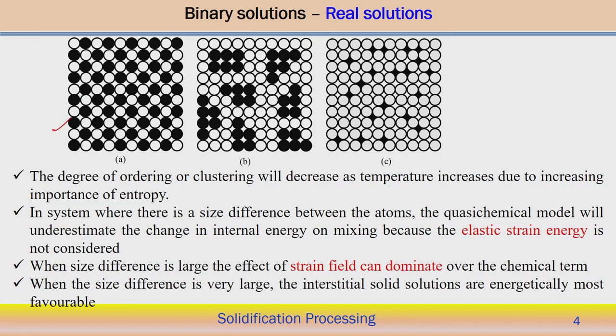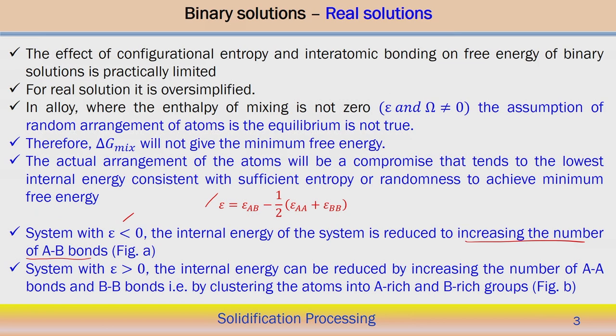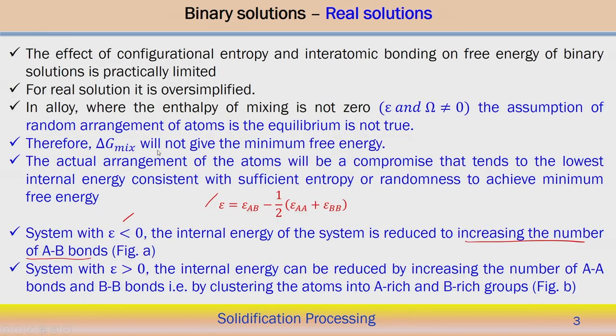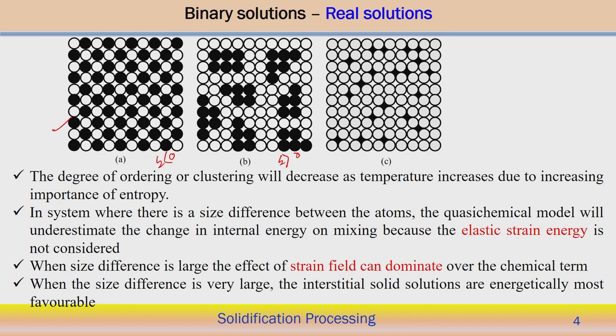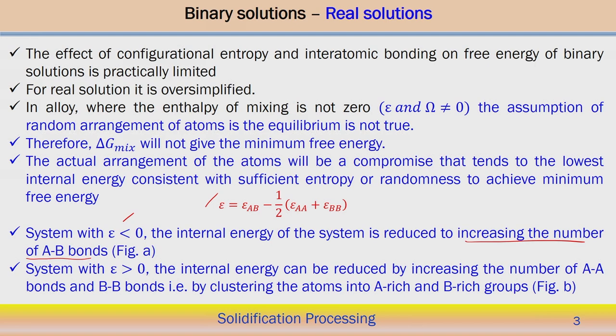The second case is the clustering of atoms. When epsilon is greater than 0, minimization of the internal energy is achieved by this particular atomic arrangement — increasing the number of AB bonds when epsilon is less than 0, or by clustering of atoms (A-rich and B-rich groupings) to increase the number of AA and BB bonds when epsilon is greater than 0. These are the two effective ways the internal energy of the system can be reduced.